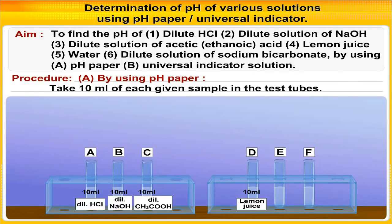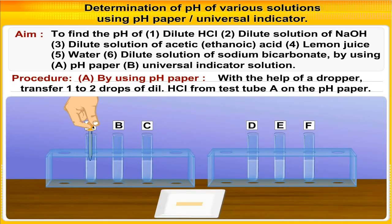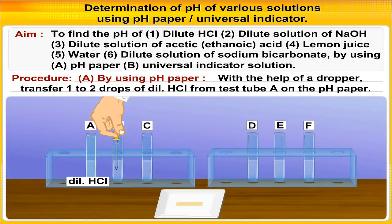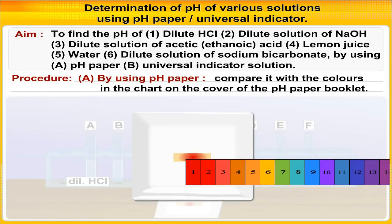Take 10 ml of each given sample in the test tubes. Now place a small piece of pH paper, about 2 cm, on a white glaze tile. With the help of a dropper, transfer 1 to 2 drops of dilute HCl from test tube A onto the pH paper.